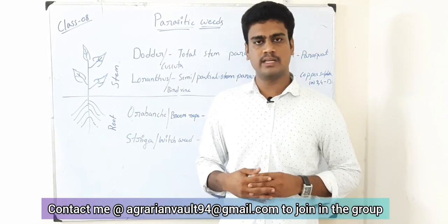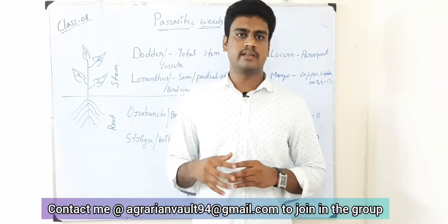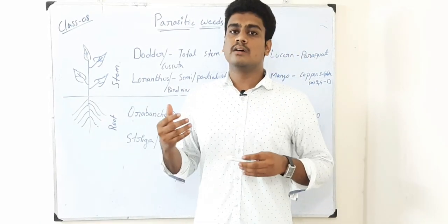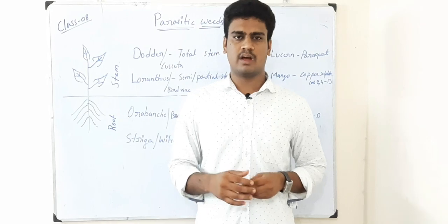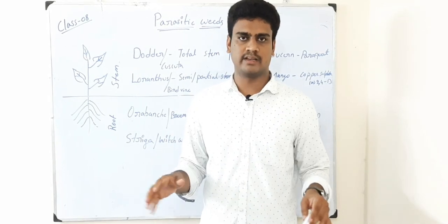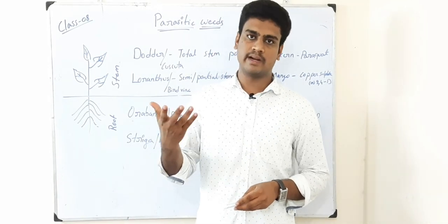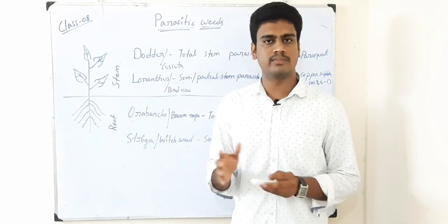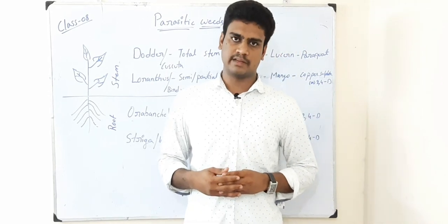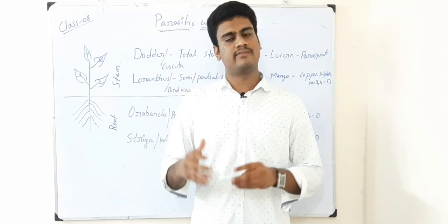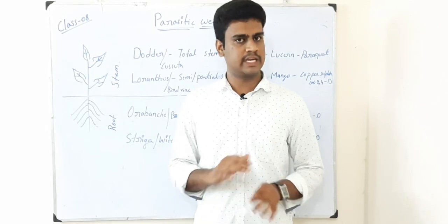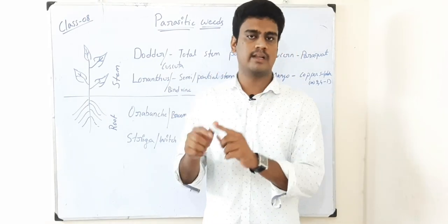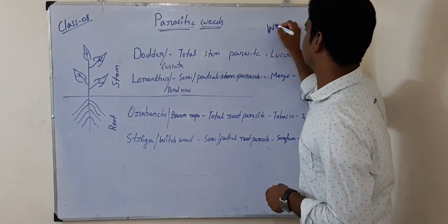There are two types: one is partial parasitic weed and the other one is complete parasitic weed. Partial parasitic weed means this particular weed will depend on the other plant for one or two resources but not completely — it may synthesize its own food by depending on sunlight to undergo photosynthesis. When it comes to the complete parasitic weed, it will completely depend on the other plant for its growth and development and will not synthesize its own food.